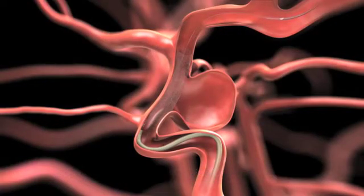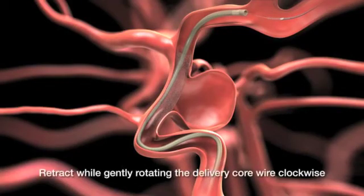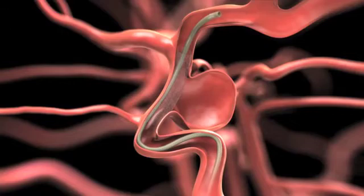The stent bridges the neck of the aneurysm completely. We then bring the microcatheter up through the stent and capture the delivery wire and remove the whole system out of the patient's body, leaving the stent across the neck of the aneurysm.